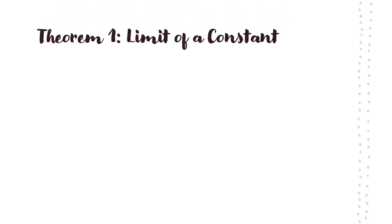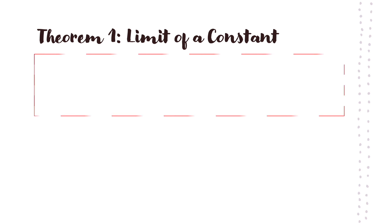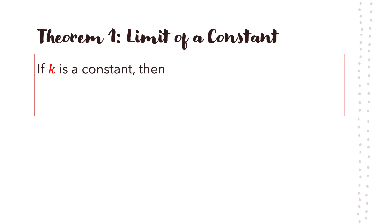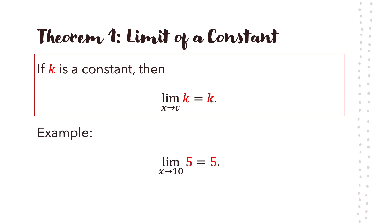The first theorem is called the limit of a constant. If k is a constant, then the limit of k as x approaches c is equal to k. It doesn't matter what c is — if k is a constant, then the limit is also k. For example, the limit of 5 as x approaches 10 is equal to 5.